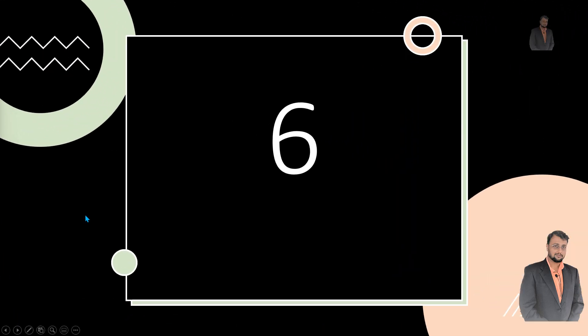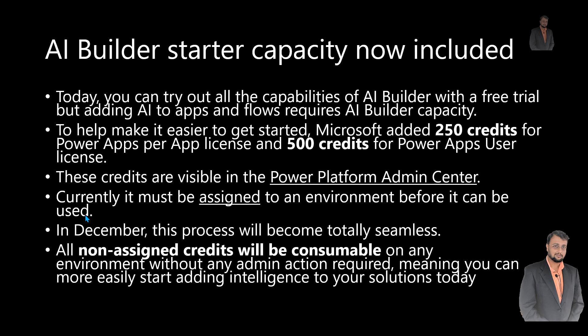Another important announcement is around AI Builder seeded capacity. Today, if you want to use AI Builder capability, you need to activate a free trial, and that capability is only available to a specific environment. To make it easier, Microsoft has added 250 credits for the PowerApps per app license and 500 credits for the PowerApps per user license. Currently, credits must be assigned to an environment before use. In December, this process will become smoother and seamless — all non-assigned credits will be consumable from any environment without any admin action required, meaning you can more easily start adding intelligence to your solutions.